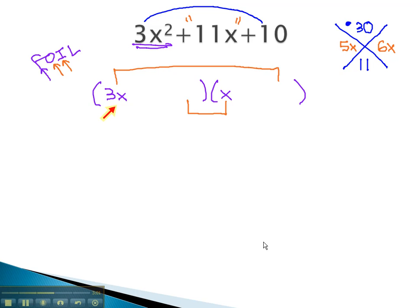I always start with the larger number, the 3x. 3x times something. 3x times what is 5x?